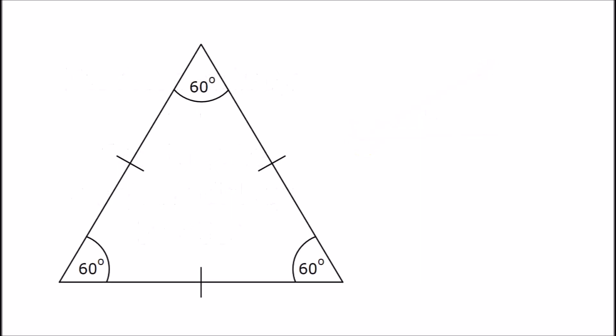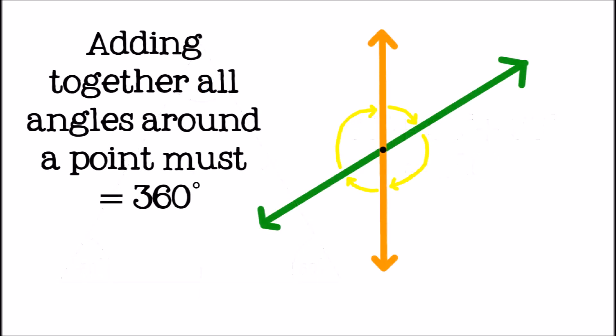Some other fun facts about how angles add up include that all the angles inside a triangle will always add up to 180 degrees. And all the angles around the point where lines intersect will always add up to 360 degrees.